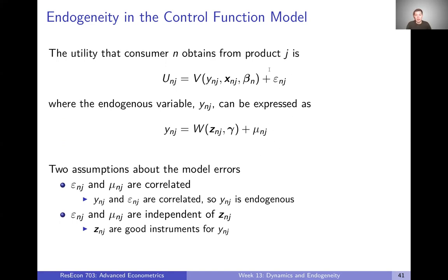Let's make two assumptions related to epsilon and mu. First, assume that epsilon and mu are correlated. If epsilon and mu are correlated, then epsilon and Y are also correlated, and Y is endogenous. That's the whole problem. But let's also assume that epsilon and mu are independent of Z. If they're independent of Z, then Z can serve as a good instrument or good instruments if it's more than one.